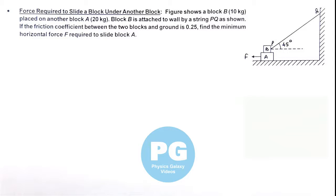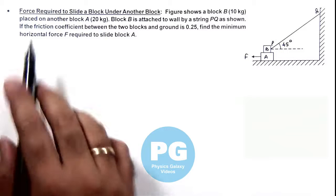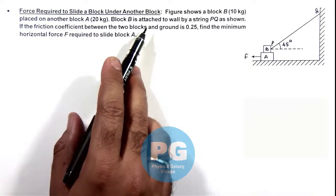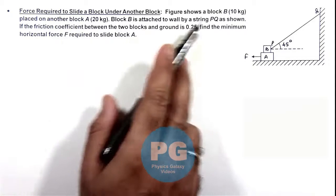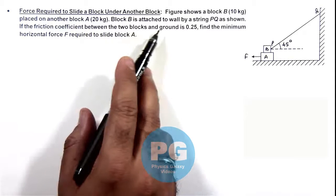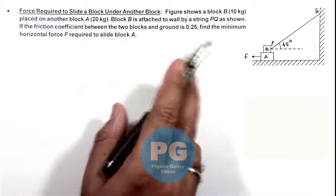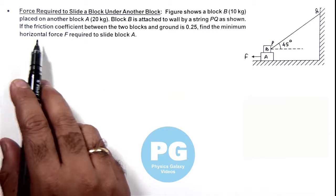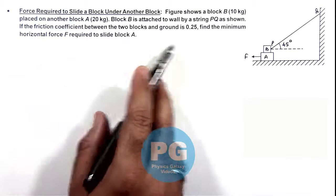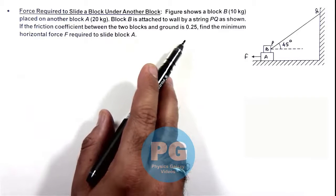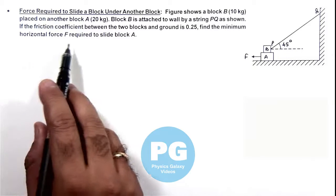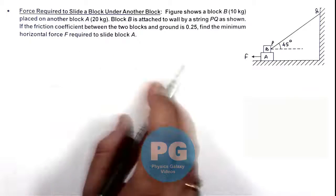In this illustration we'll discuss the force required to slide a block under another block. The figure shows block B placed on another block A, where B is attached to a wall by a string PQ. The friction coefficient between the two blocks and ground is 0.25. We are required to find the minimum horizontal force F required to slide block A.